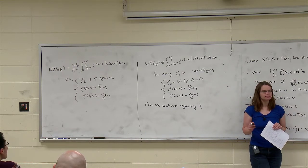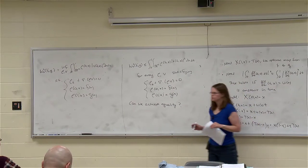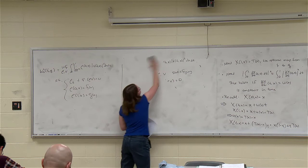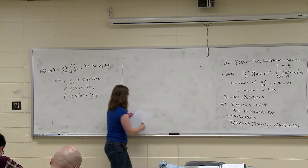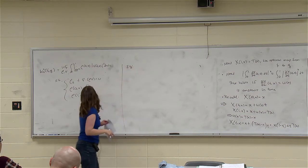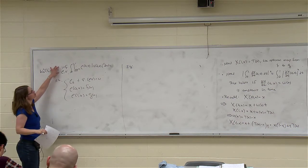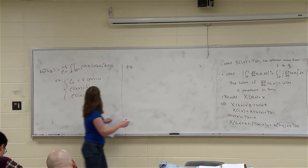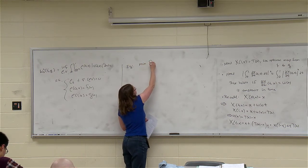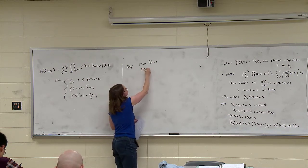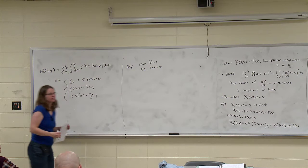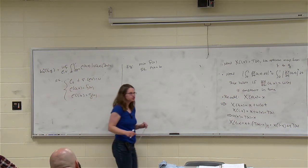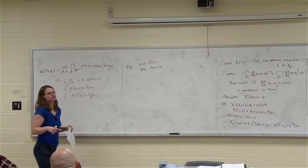How do we actually solve this? Let's start with a toy problem: minimize f(x) subject to Ax = b. One approach is to write down a Lagrangian and try to solve the saddle point problem. We write L(x, λ) = f(x) + λ·(Ax − b), and solve: min_x max_λ [f(x) + λ·(Ax − b)]. The supremum over λ forces the equality constraint to be satisfied.